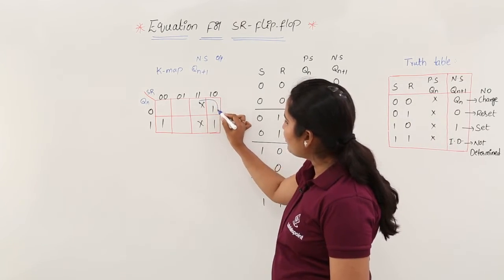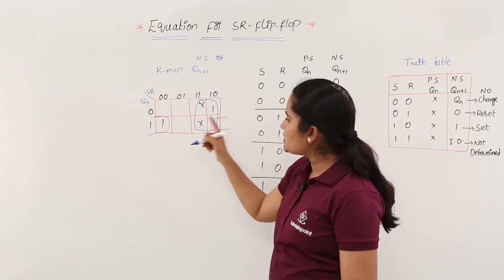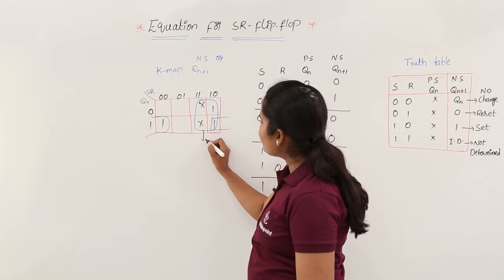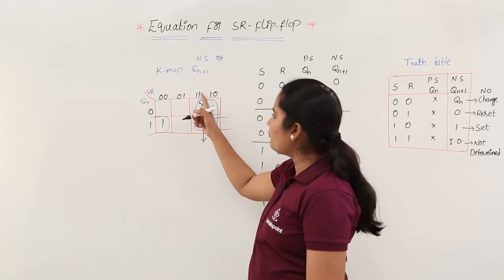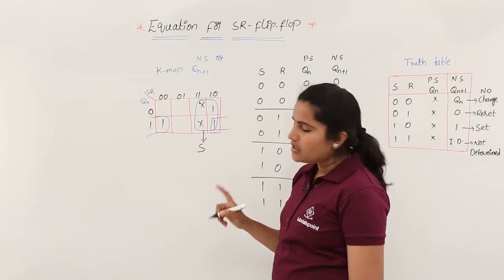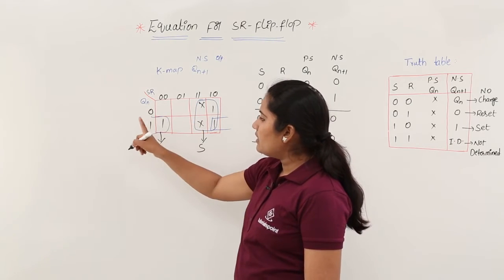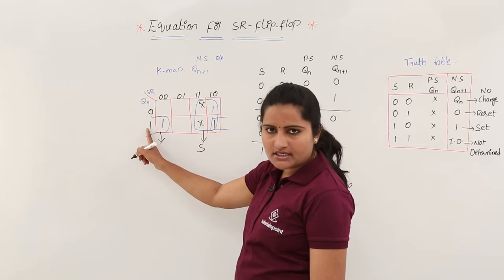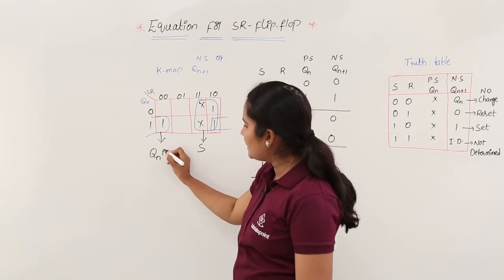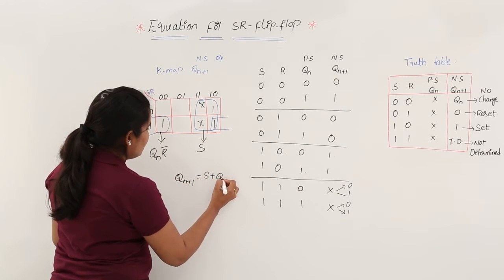Now it is time for grouping. I am grouping this quad and using an opposite-side double grouping. Writing the prime implicant values: for the quad, there is no side-wise combination but a top-wise combination of two cells where S is common — so S is the value of this prime implicant. For the double, side-wise it covers only QN (single cell), and top-side it covers two cells where the combination is 0, representing R-bar. Finally, the equation for QN+1 is S plus QN·R-bar.